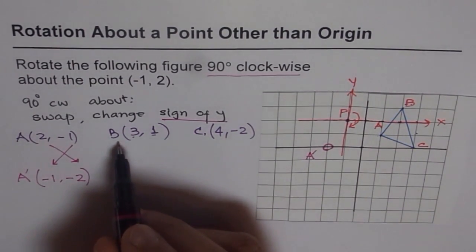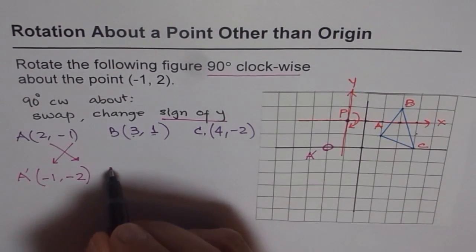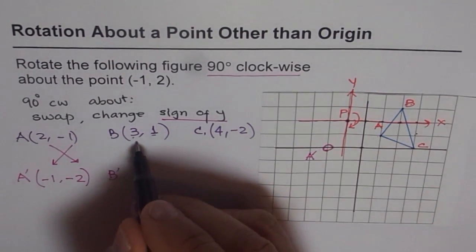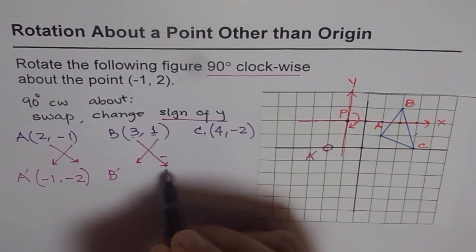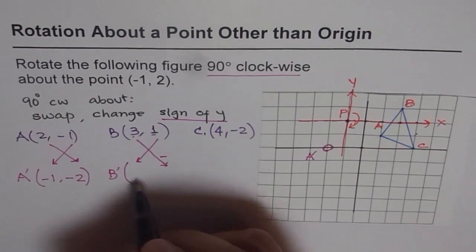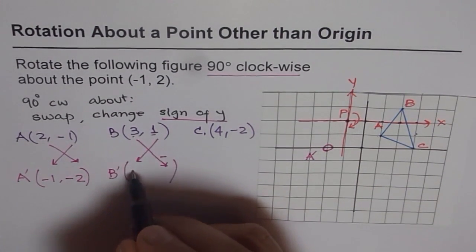Now let's figure out where should B be, rather B'. So B' should be, we will interchange these positions and change the sign for Y, right? So what do we get?